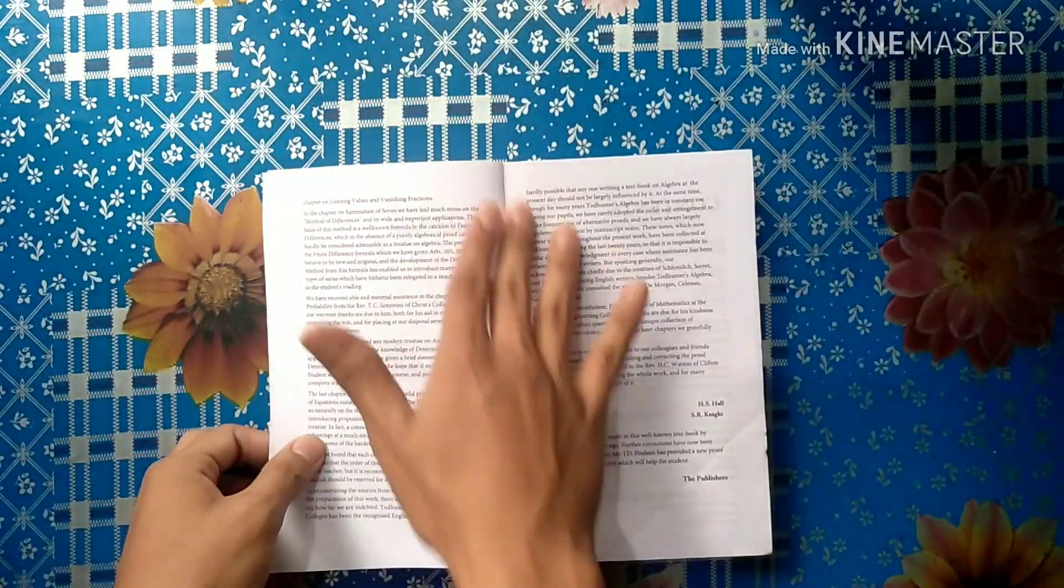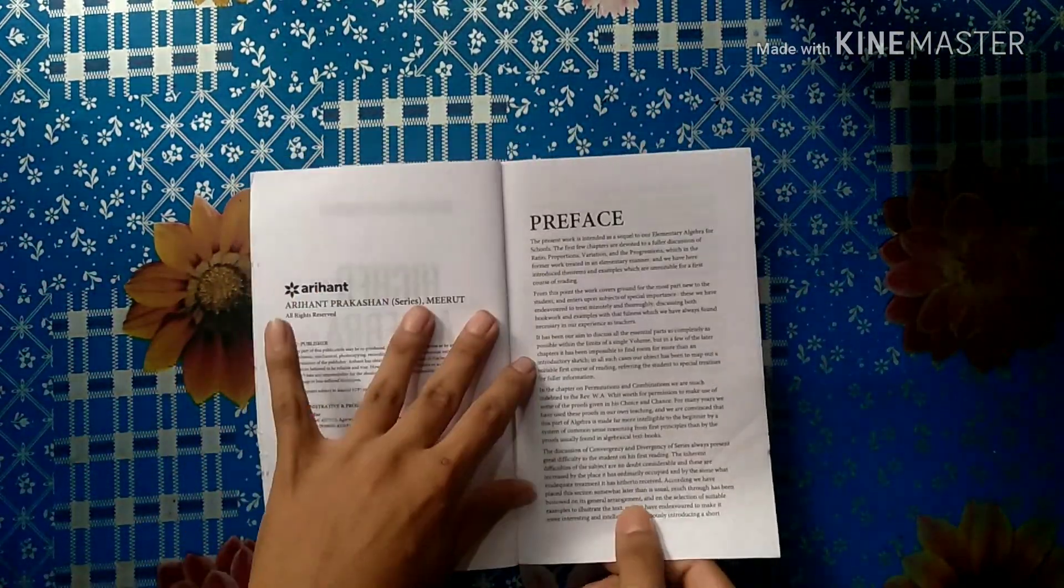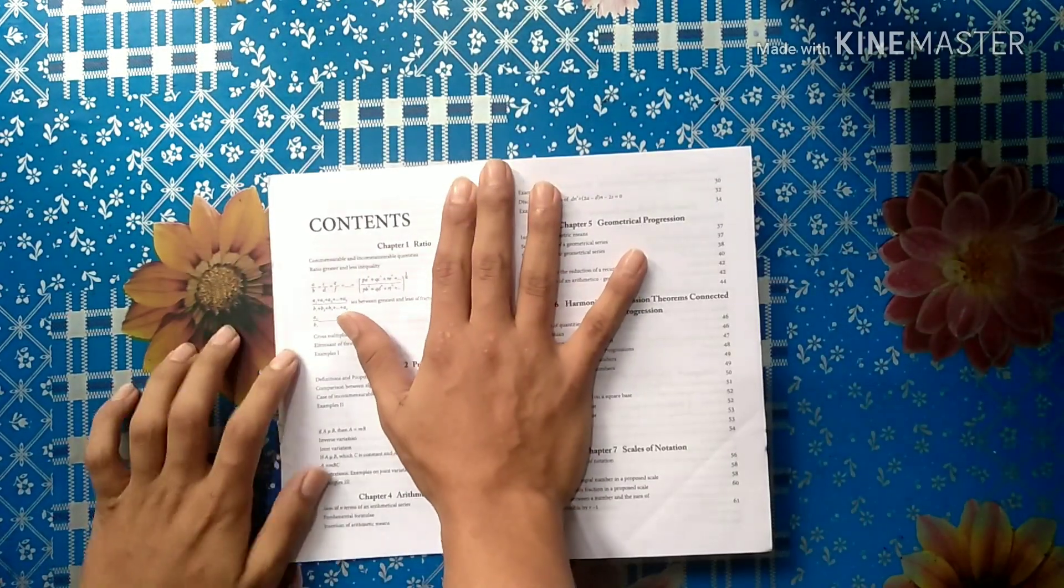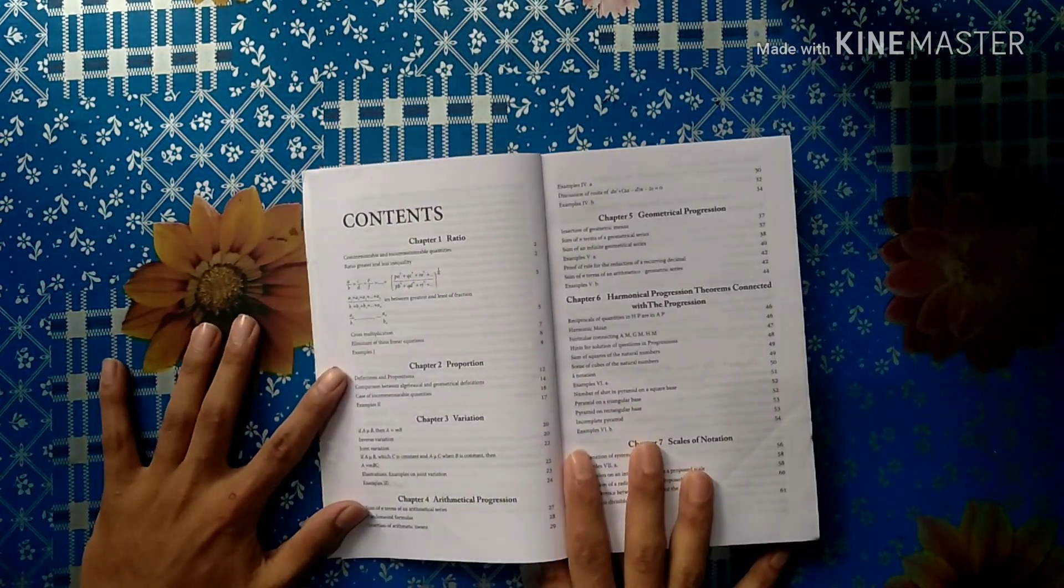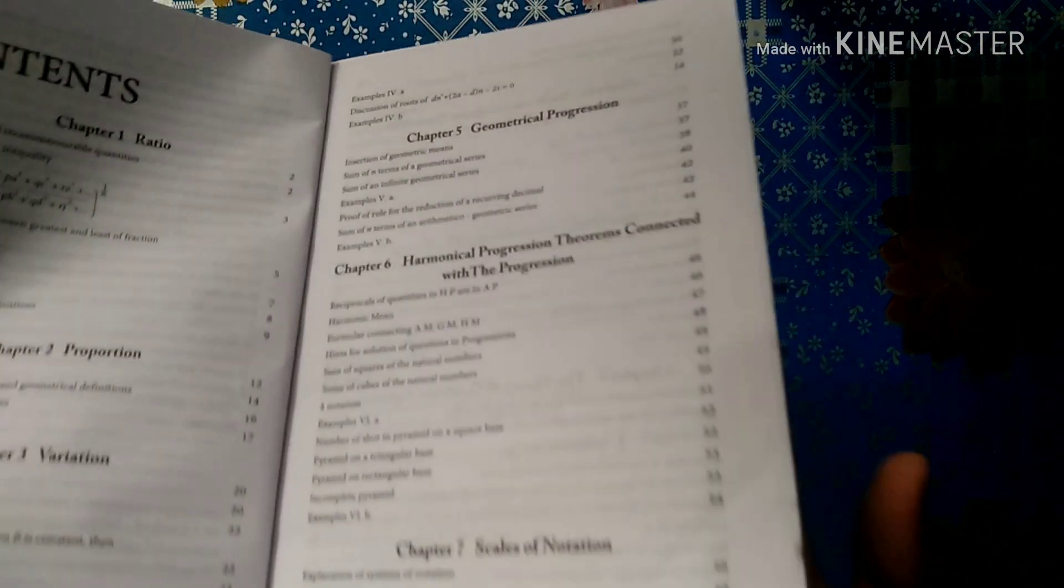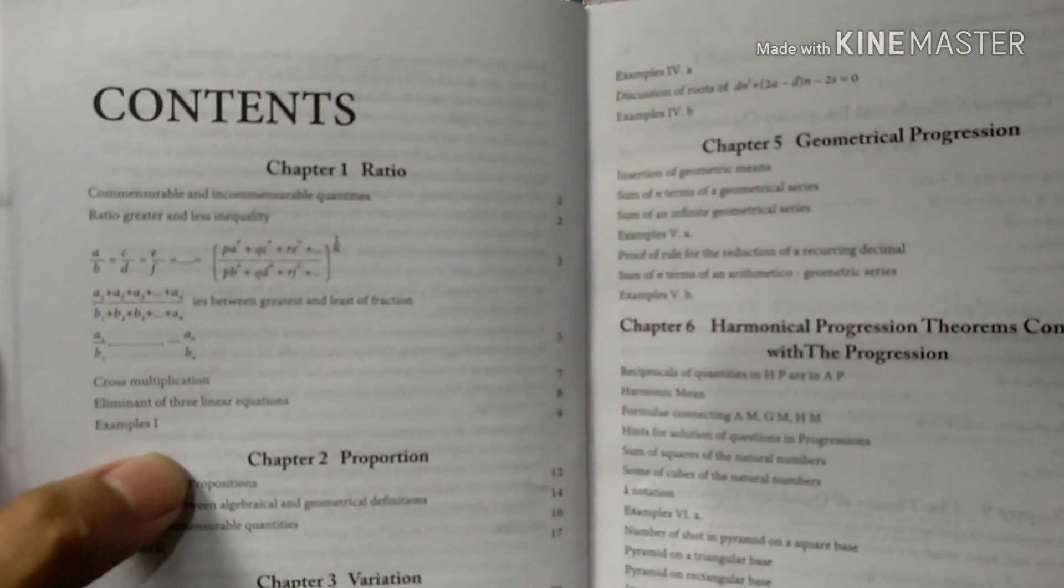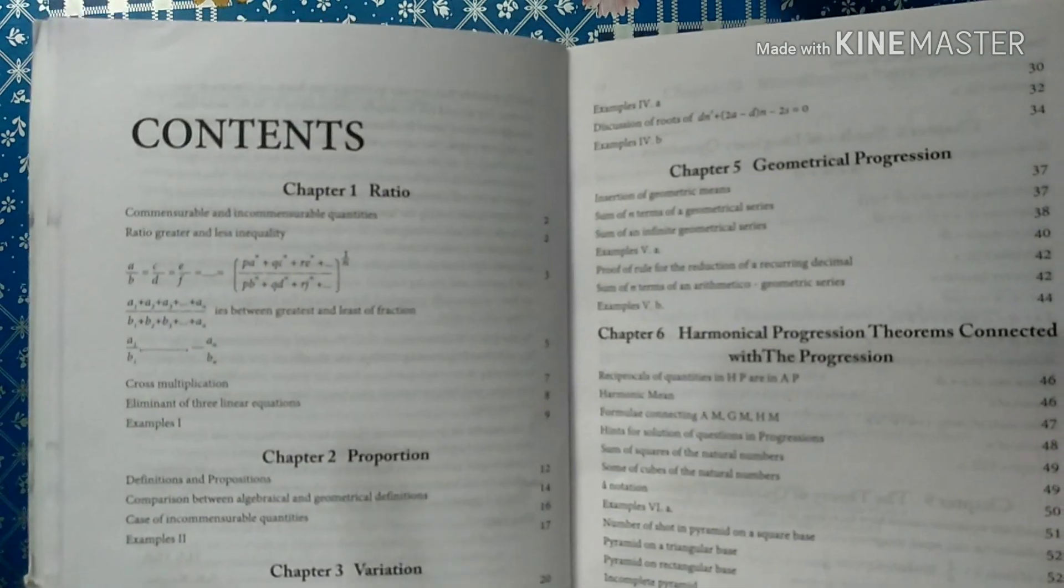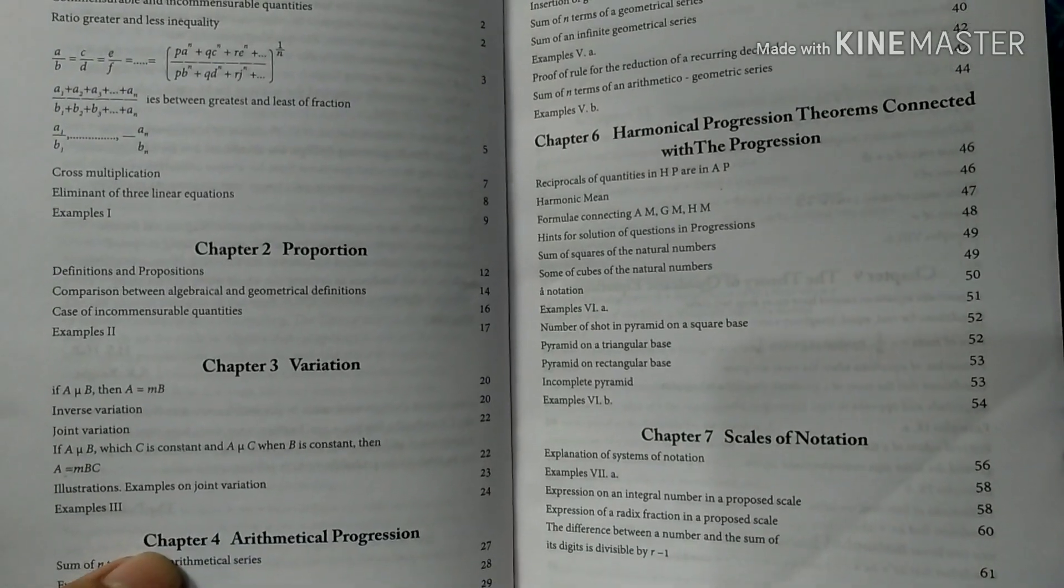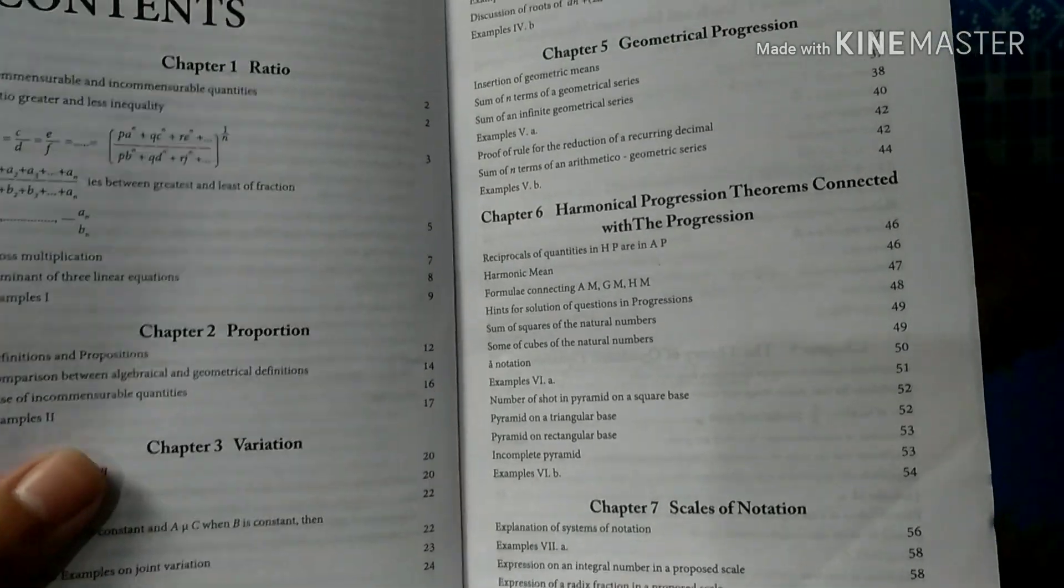Ratio, Proportion. This is the Preface, I will be able to read. The first chapter is Ratio. Then Ratio, Proportion, Variation, Arithmetic Progression or AP.